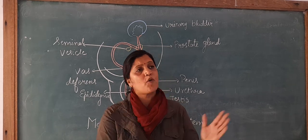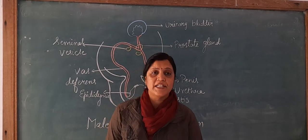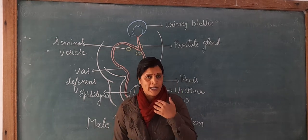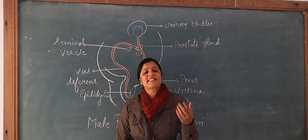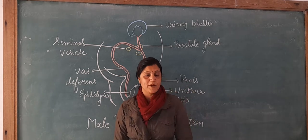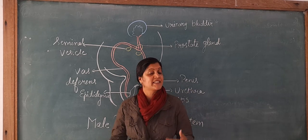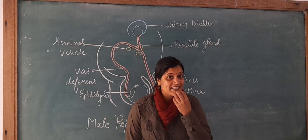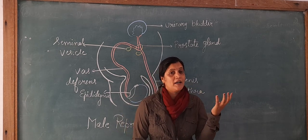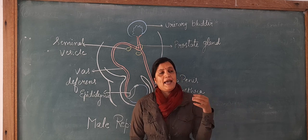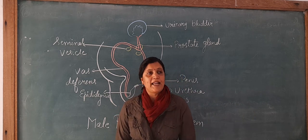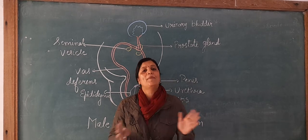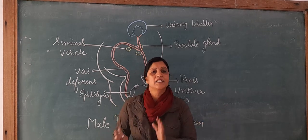Some common secondary sexual characters develop in both boys and girls: the skin becomes oily, so you can see some pimples on the skin. Second, the voice becomes different. And also there is hair growth on the legs and hands. These are some common changes in both boys and girls.